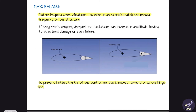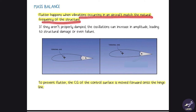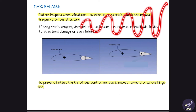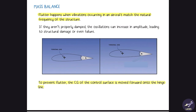Mass balance: flutter happens when vibration occurring in an aircraft matches the natural frequency of the structure — this is known as resonance. The amplitude of vibration will keep increasing and finally destroy the structure. Mass balance is done to reduce flutter, whereas aerodynamic balance is done to reduce the hinge moment.